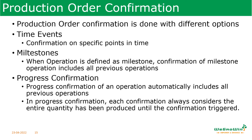Production order confirmation can be done in three ways. One is time events, where specific confirmation for each operation is done. Next is milestone confirmation — when an operation is defined as a milestone, confirmation of all previous operations will be confirmed. Another is progress confirmation, where an operation automatically accounts for all previous operations.